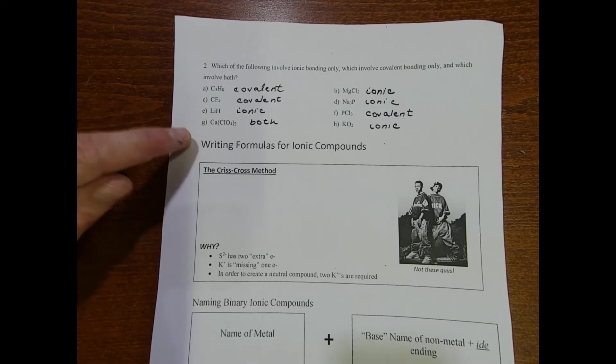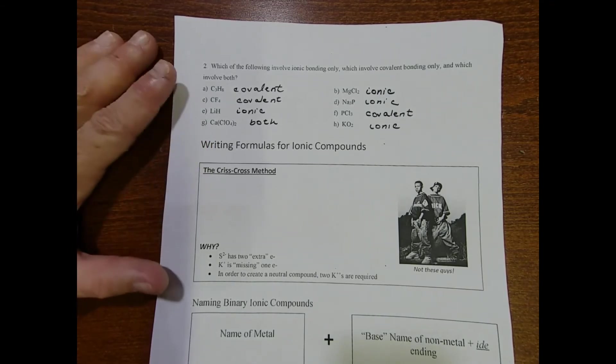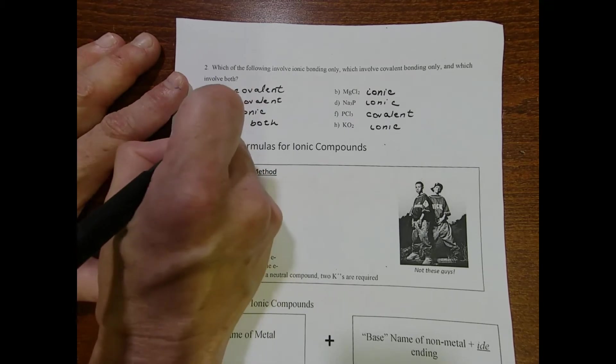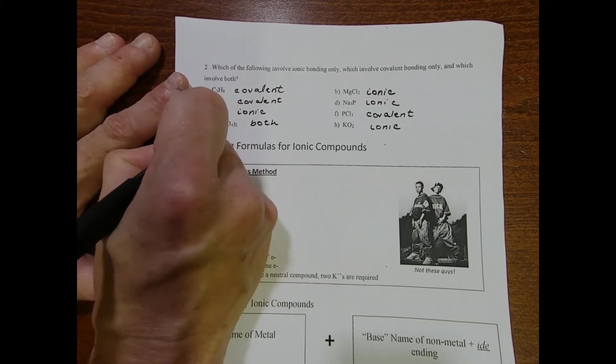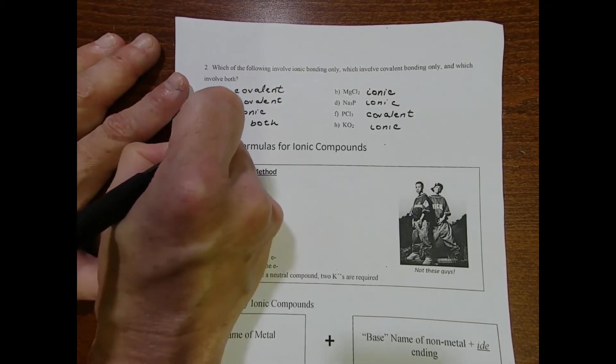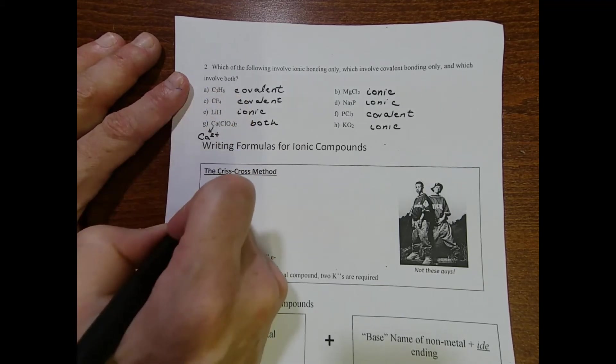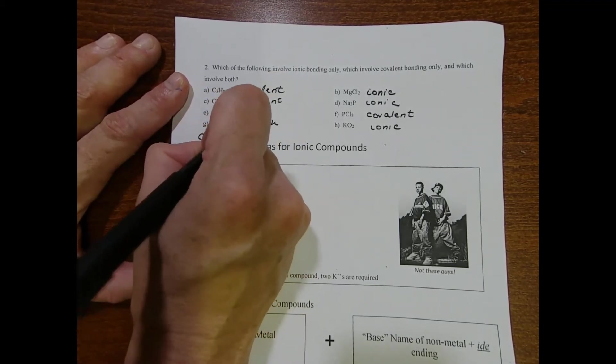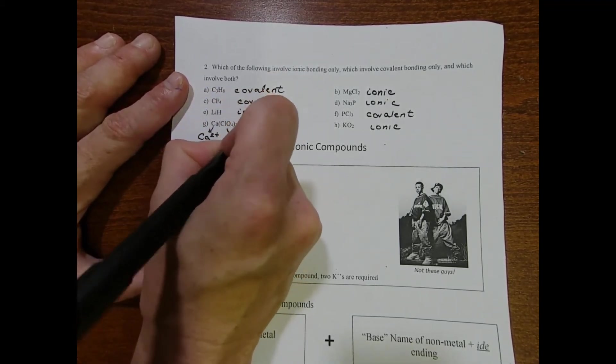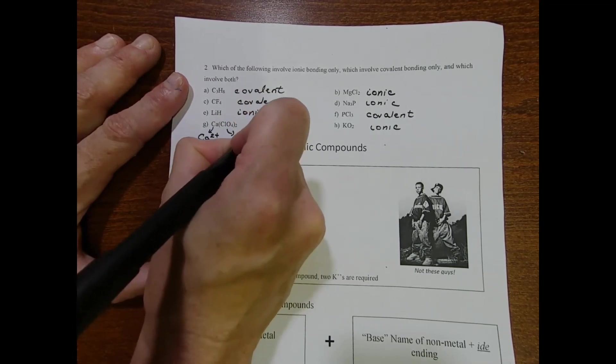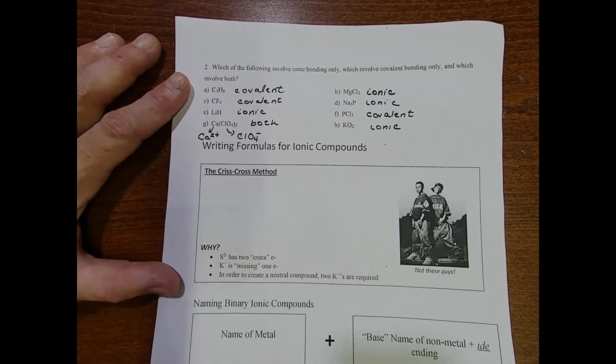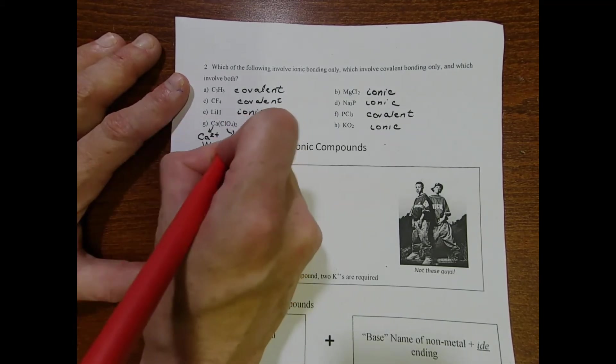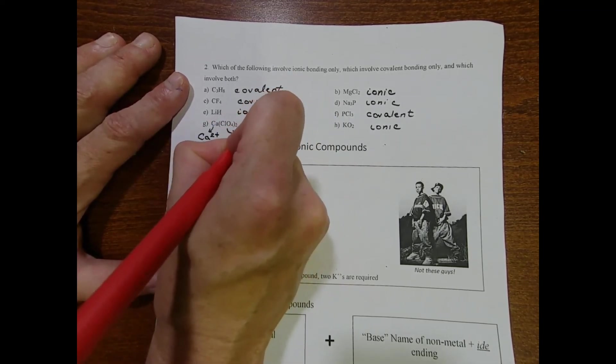G is also a little bit tricky. We have calcium which is a metal and it's going to form a 2+ ion because it's in group 2. Then we have what's known as perchlorate - it's one of our polyatomic ions. What tends to happen, not always but in a lot of cases, your polyatomic ion is going to look covalent because it has all nonmetals.